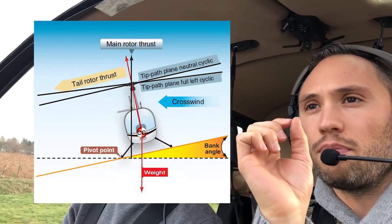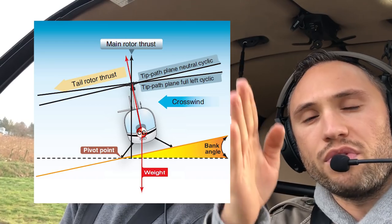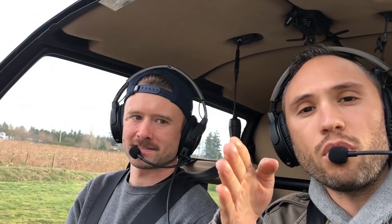So first of all, a quick explanation between what dynamic and static rollover are. Dynamic is if you were to hook a skid on the ground, the helicopter would start rolling over. Before the center of gravity or center of mass of the helicopter crosses over top of the fulcrum pivot point, that's still called dynamic rollover — meaning you can still fix the problem. You can use counter-cyclic, like left cyclic if you're tipping to the right, or you can lower the collective, and both of those things will help the helicopter flatten back out and land back on the ground.